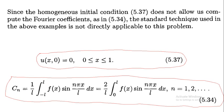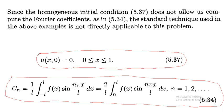Since the homogeneous initial condition 5.37, u(x,0) = 0, does not allow us to compute the Fourier coefficients — because f(x) = 0, we cannot compute the Fourier coefficients as in equation 5.34 — the standard technique used in the previous example is not directly applicable to this problem. A different technique must be applied.